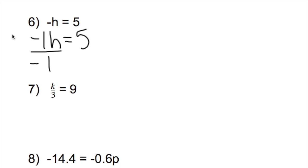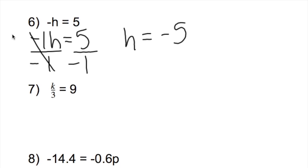Whatever we do on one side, we have to do on the other. The negative 1s cancel, and I'm left with h. And 5 divided by negative 1 leaves me with negative 5.